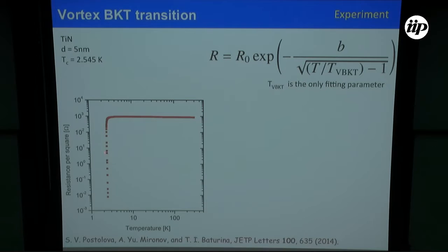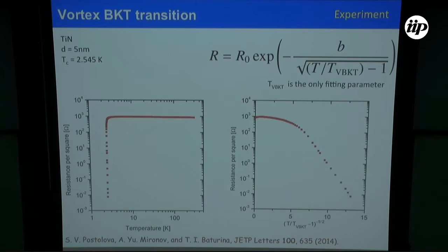Let's just play with this formula and put the same data on these coordinates. The only adjusting parameter here is temperature. If we take temperature a little bit larger than we have taken here, the data will go like this. If it is a little bit smaller, like this. So there is only one unique temperature when, as you see here, almost five decades, the resistance follows this expression. It is pretty nice exemplary vortex BKT transition.